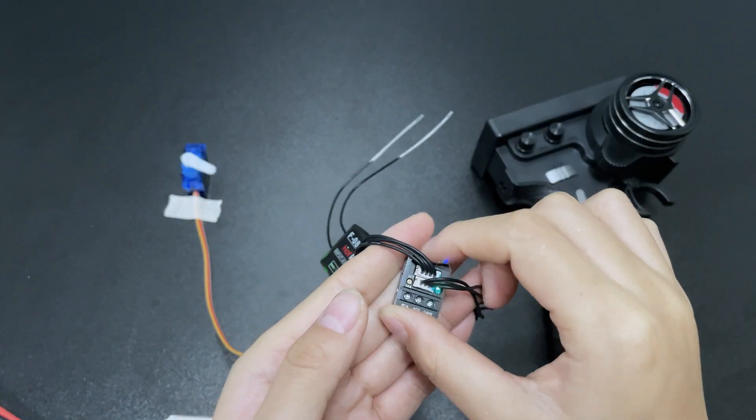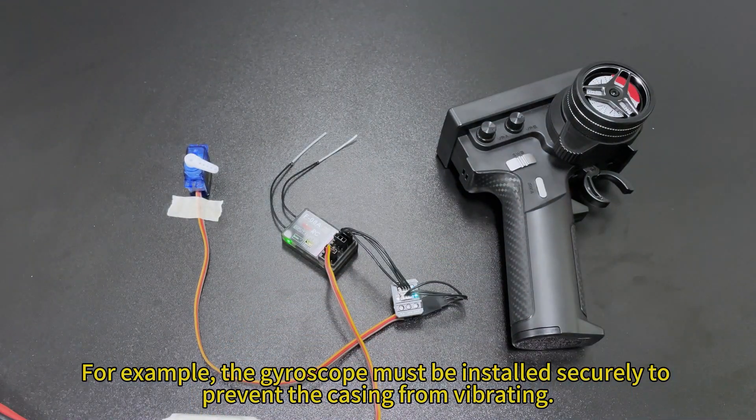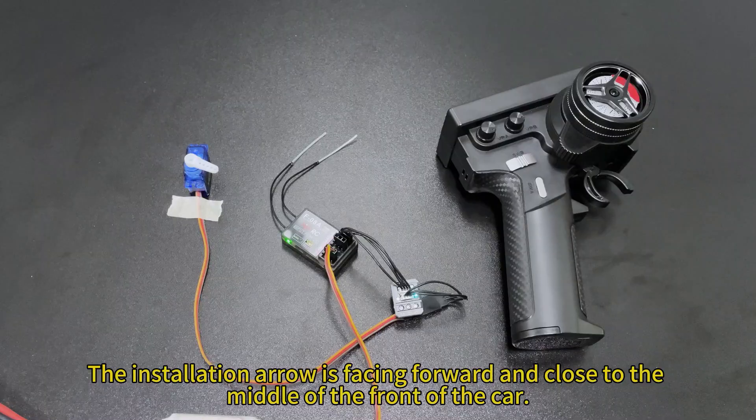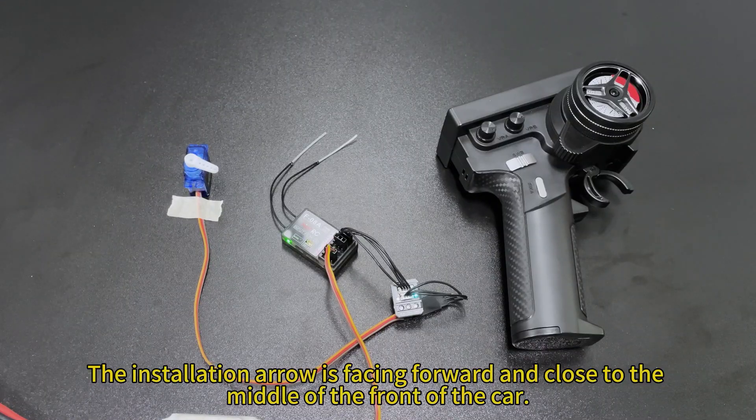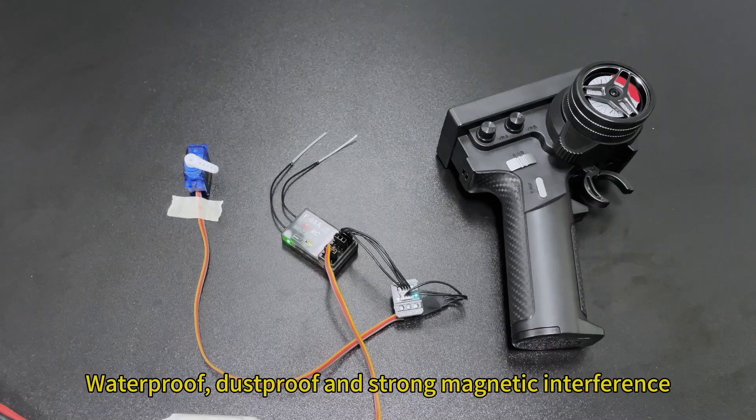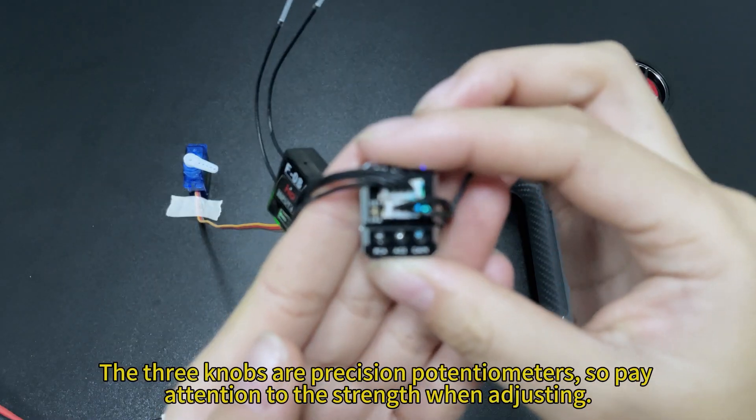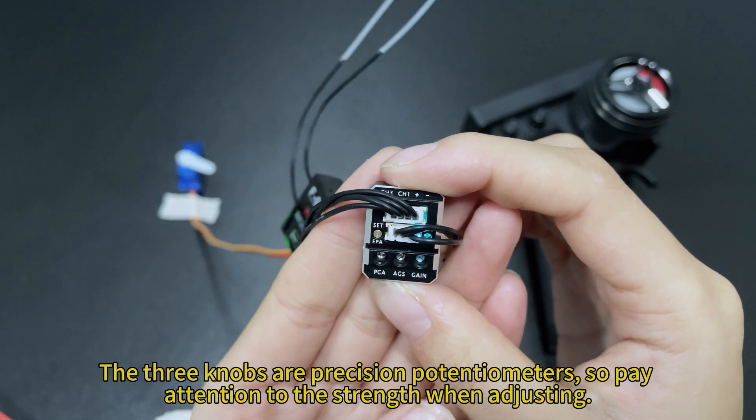There are some things to note about gyroscopes. For example, the gyroscope must be installed securely to prevent the casing from vibrating. The installation arrow is facing forward and close to the middle of the front of the car. Waterproof, dustproof and strong magnetic interference. The three knobs are precision potentiometers, so pay attention to the strings when adjusting.